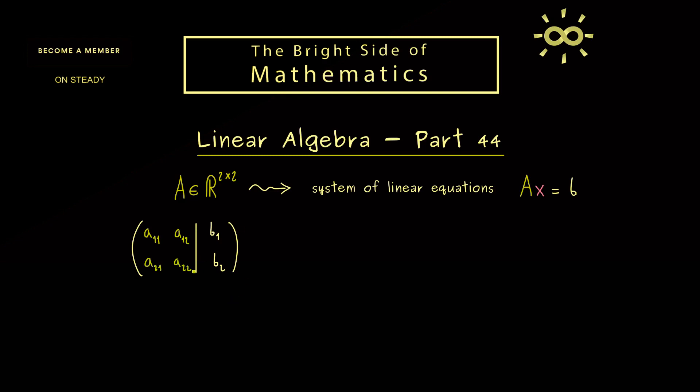And at this point you already know we can simply use the Gaussian elimination to solve this system of linear equations. However, in order to make this work, let's assume that our first entry here is non-zero. In other words, we just restrict which matrices A we can choose here.